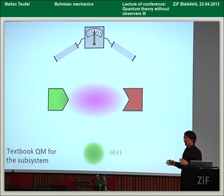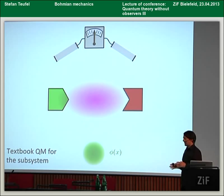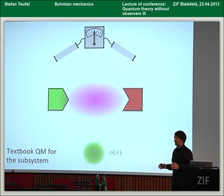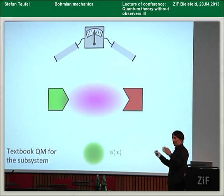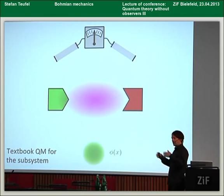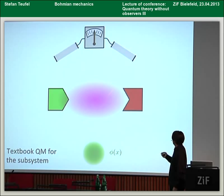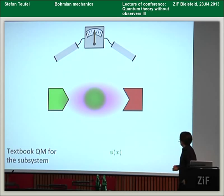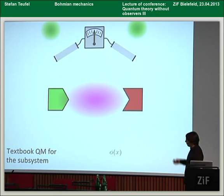Let me explain why this is true in general by discussing the paradigmatic example of a quantum measurement: the Stern-Gerlach experiment. I'll discuss this first from the view of textbook quantum mechanics, then from the view of Bohmian mechanics for the single particle alone — the naive view — and then elaborate. In the Stern-Gerlach experiment we have a particle with spin and position x. This green blob here is the support of the wave function. You let it go through an inhomogeneous magnetic field, and solving Schrödinger's equation tells you that for appropriate initial ψ, the wave packet splits into two parts, one going left and one going right.